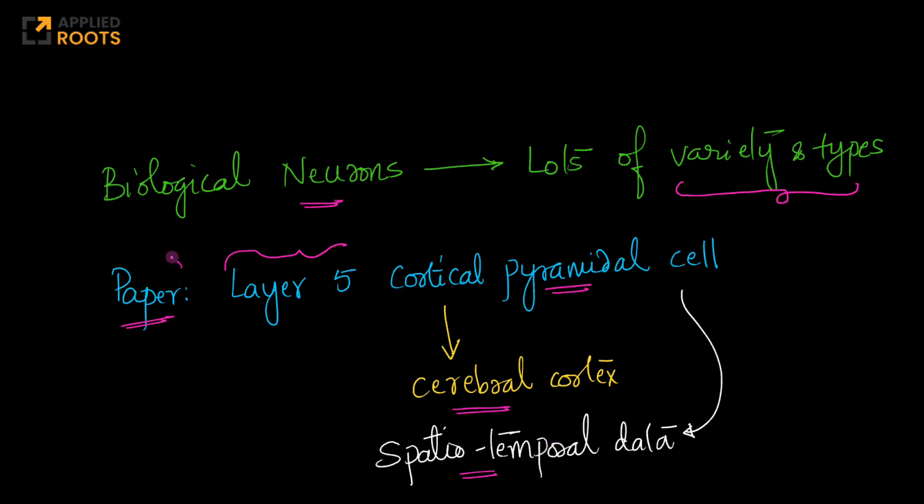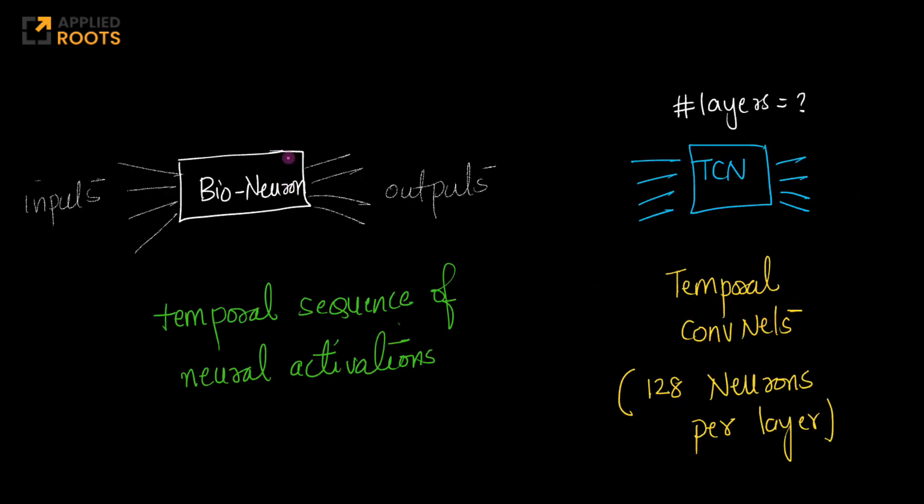In the research paper, they tried to say, to simulate one such neuron, what type of deep neural network do we need? If you look at this biological neuron as a black box, it has a bunch of inputs - electrical inputs, typically electrical signals - and a bunch of outputs. It is basically a temporal sequence of neural activations. You get these electrical spikes through inputs and the biological neuron processes all this information and generates a bunch of outputs.